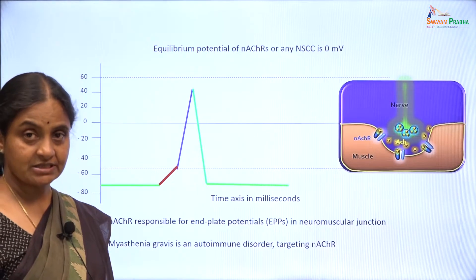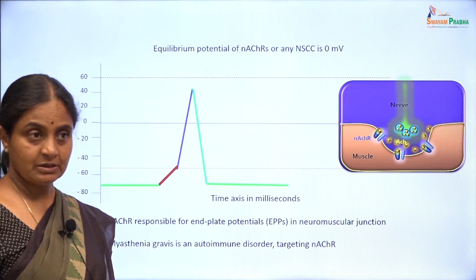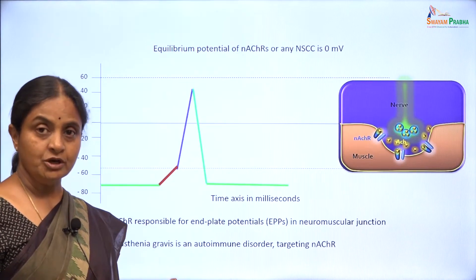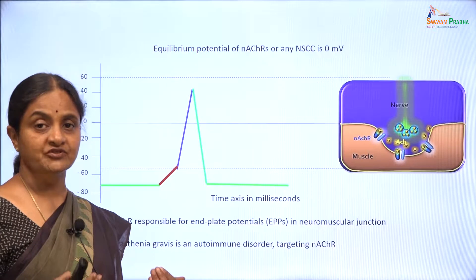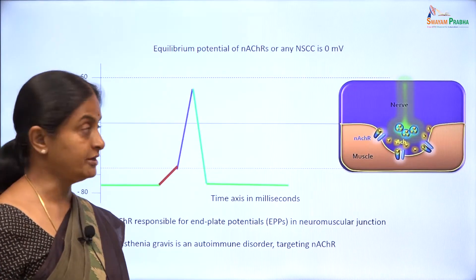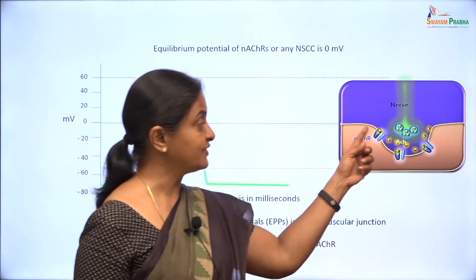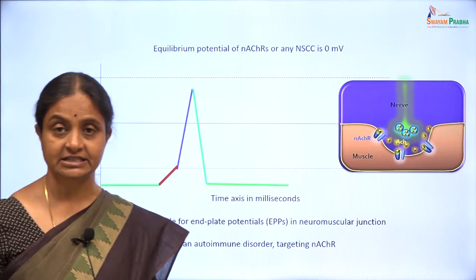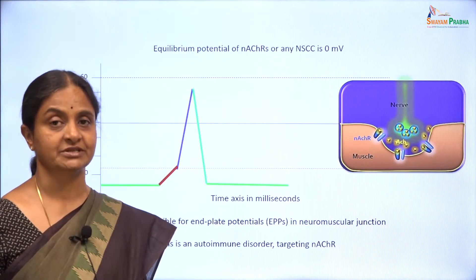Myasthenia gravis, which is a disorder causing weakness of muscles, is an autoimmune disorder specifically targeting the nicotinic acetylcholine receptors.